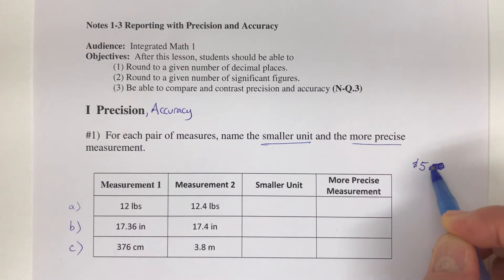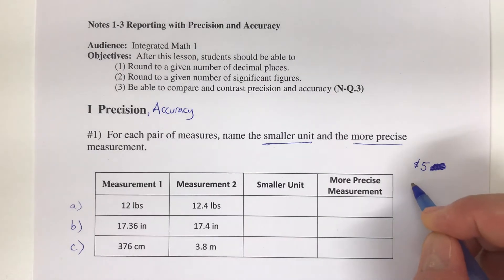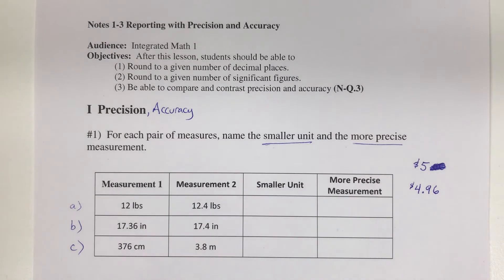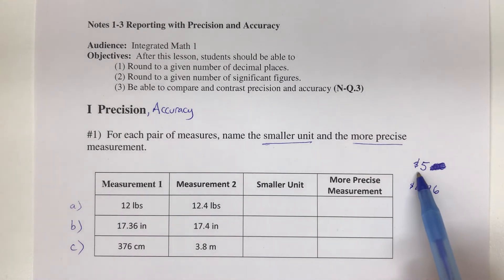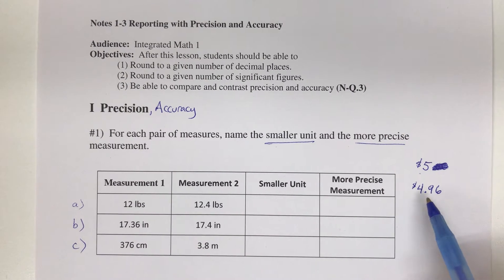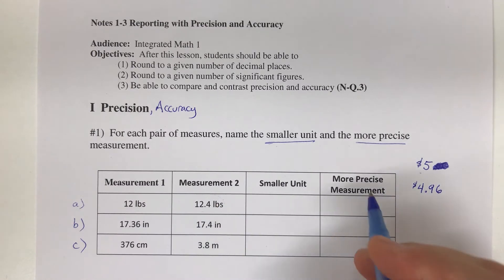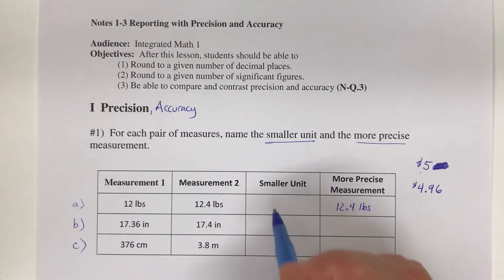But if I say we have four dollars and ninety-six cents, you could round that up to five, but this is the smaller unit of measurement and is more precise. So 12.4 pounds is the more precise measurement because our measures get into tenths. This is one-tenth, 12 and four-tenths pounds.